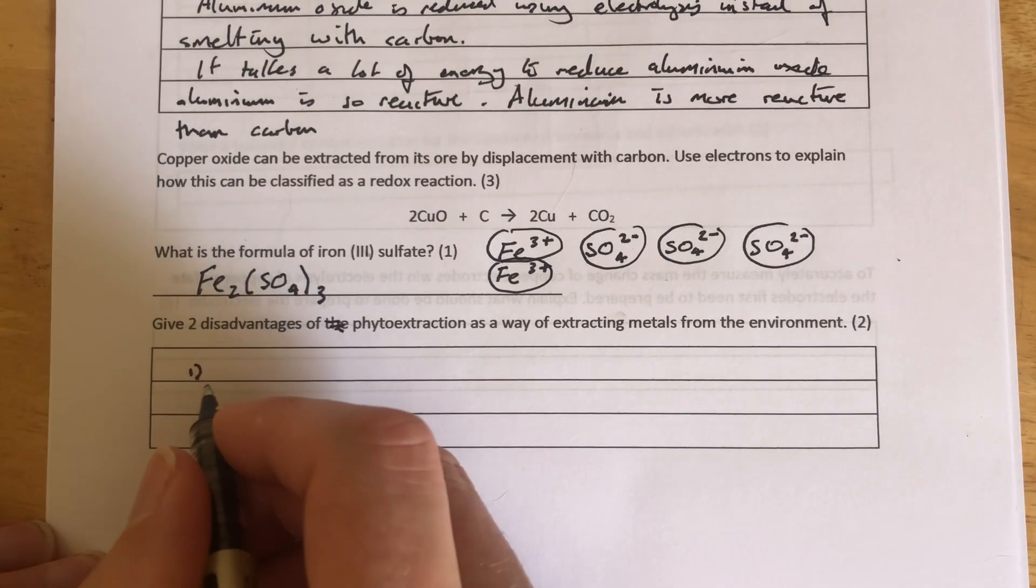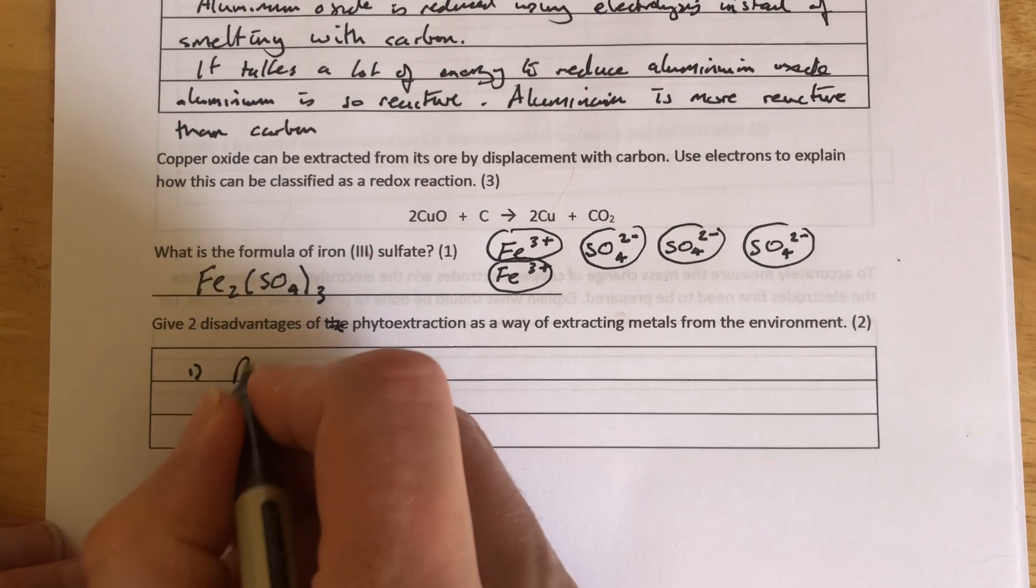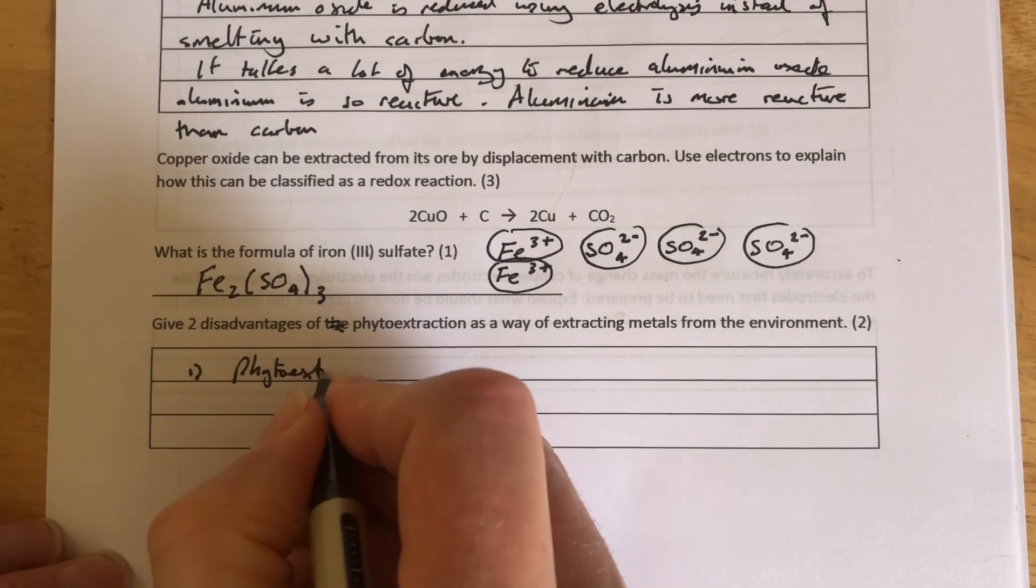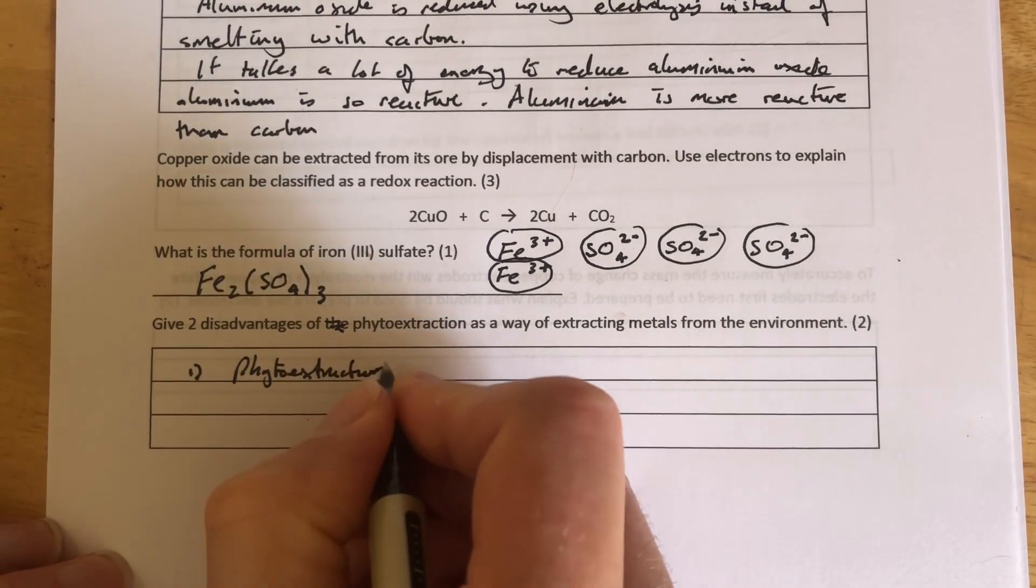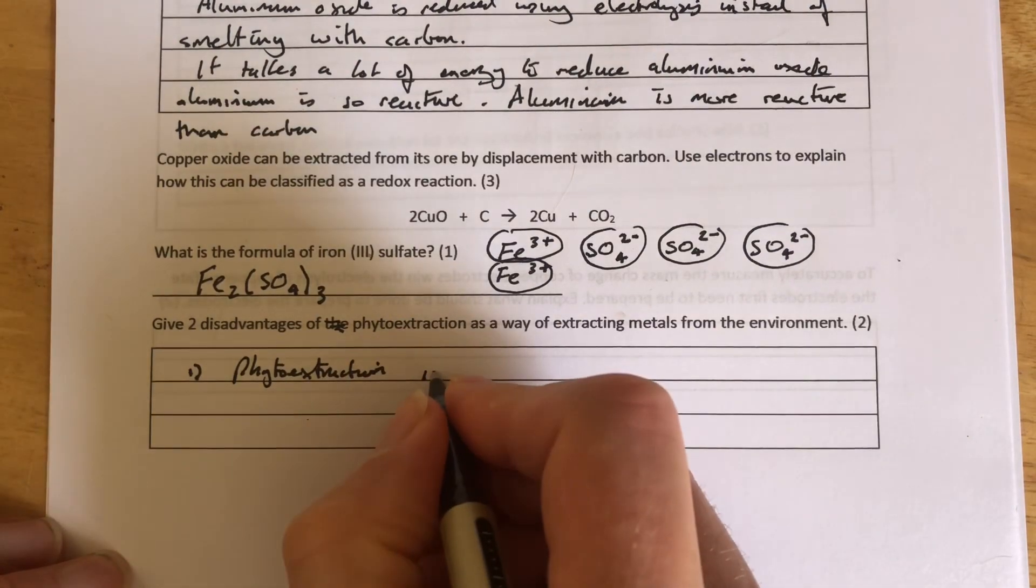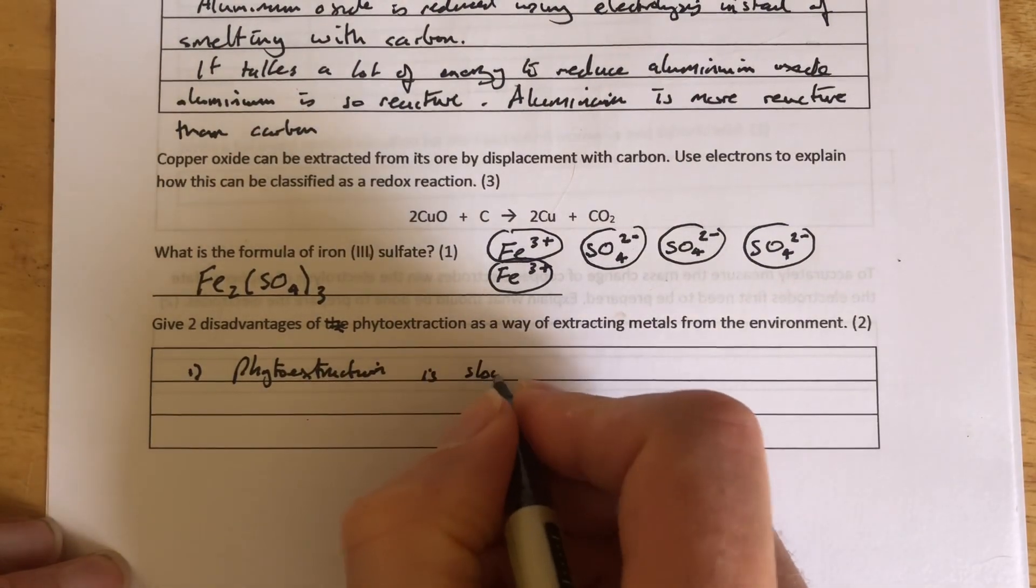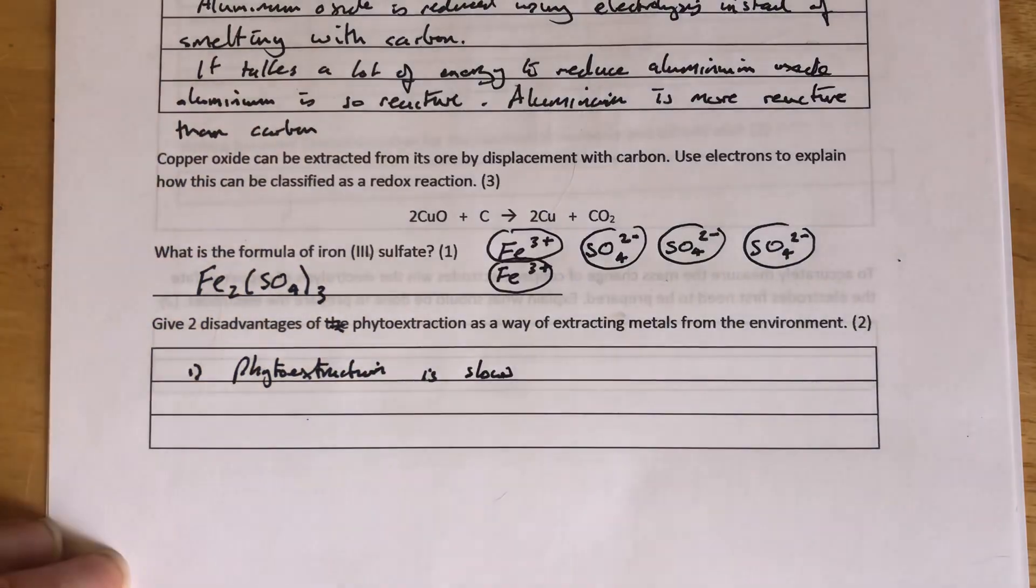So the first thing to say here is phytoextraction is slow. In other words, you've got to wait for the plants to grow before you can harvest them, burn them, and extract the metal from their ash.